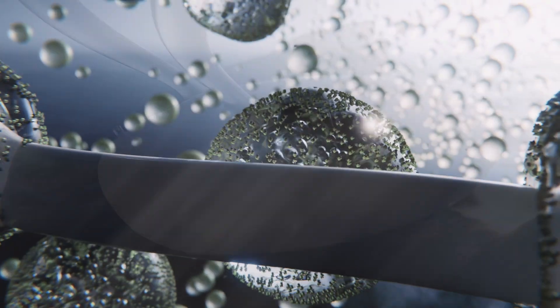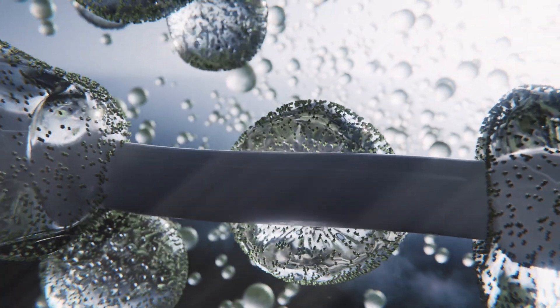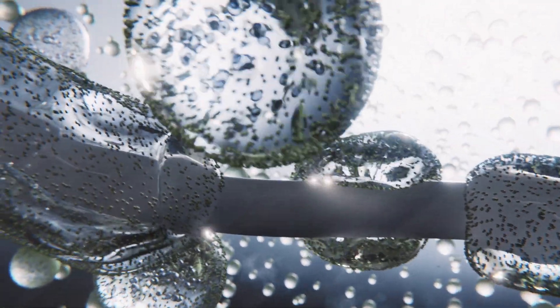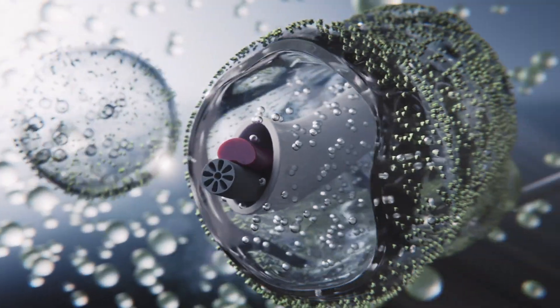They converge on the sperm tail, and something extraordinary happens. They start to fuse, forming what appears to be a continuous vesicular sheath around the entire length of the sperm tail.